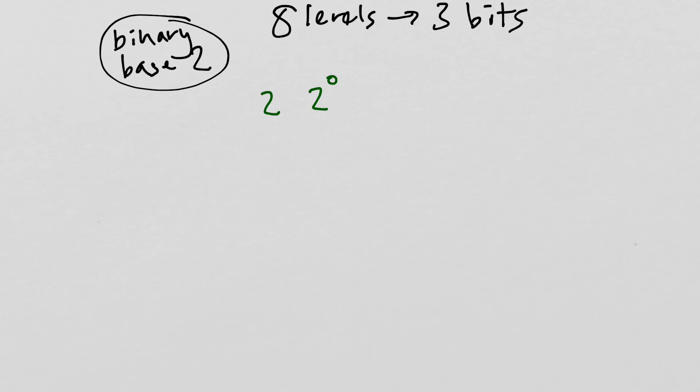So then coming back to that question of why if we have 8 levels that corresponds to 3 bits, that's because we're working in binary. And so in binary, here I'll have a slot for 2 to the 0th, and a slot for 2 to the 1st, and 2 to the 2nd, 2 to the 3rd, and so forth.